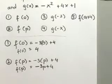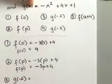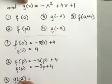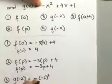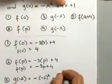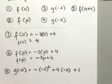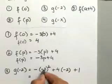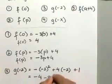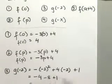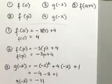Now, g of negative 2: we're looking at the g of x function and replacing all x's with negative 2. You have negative of negative 2 squared — be careful, you have two different negatives here — plus 4 times negative 2 plus 1. Negative 2 squared gives positive 4; the outside negative makes it negative 4. Then 4 times negative 2 is negative 8, plus 1 gives negative 12 plus 1, which is negative 11. So g of negative 2 equals negative 11.